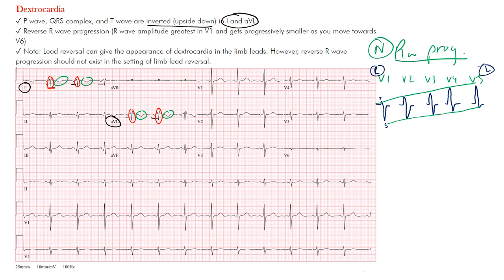When we talk about reverse R wave progression, you can expect to see the opposite. Imagine this is V1, V2, V3, V4, and V5 — that's pretty much what happens in dextrocardia. The left ventricle is more rightward, on the right side of the patient, so everything is going in the opposite direction. Your R waves will show a decrease in amplitude as we go from V1 to V5, meaning the biggest R wave should be in V1 and the smallest R wave in V5 as we move from right to left.